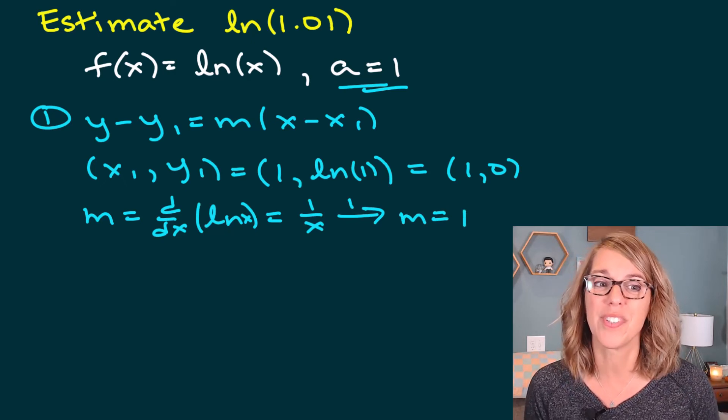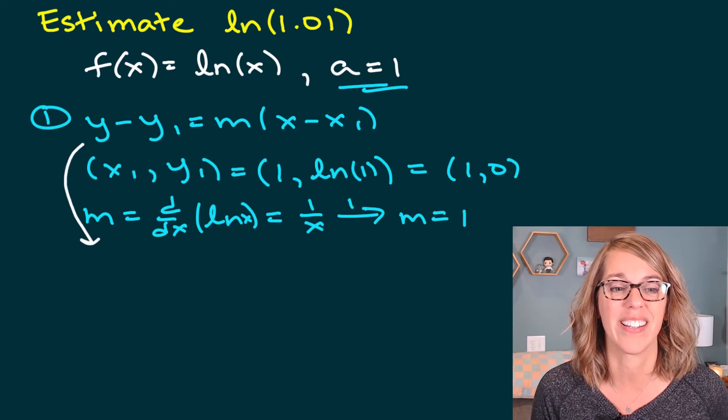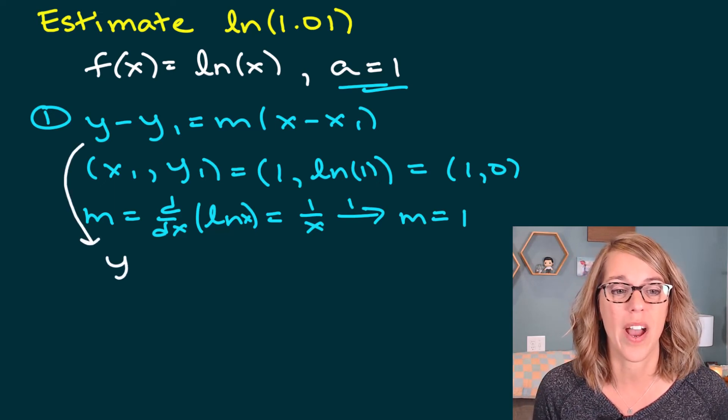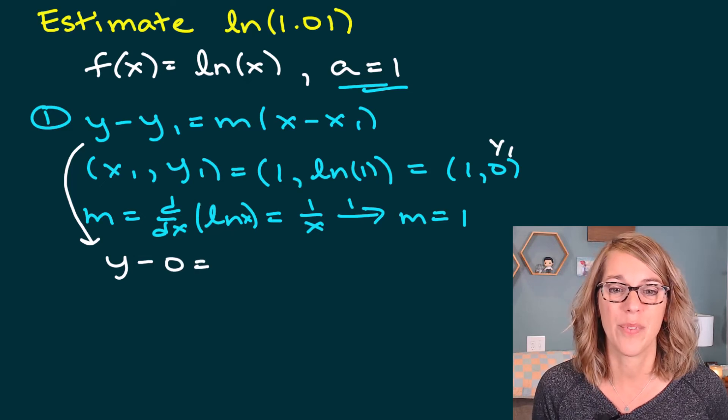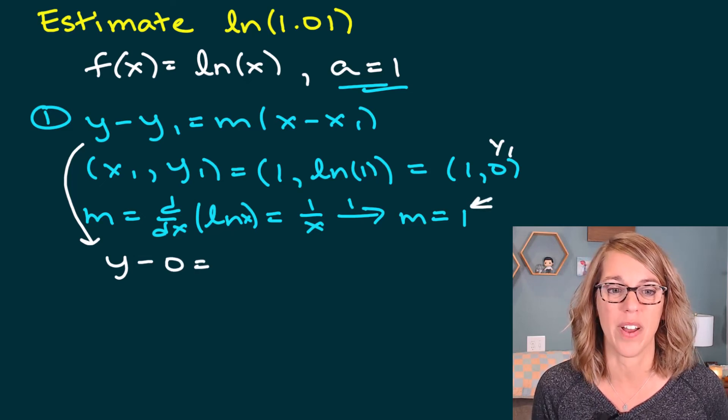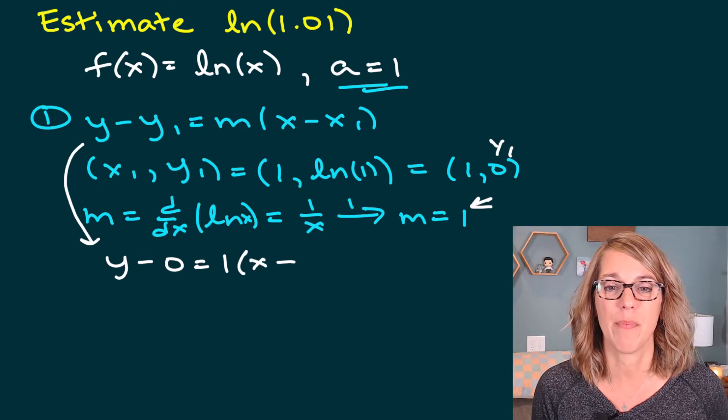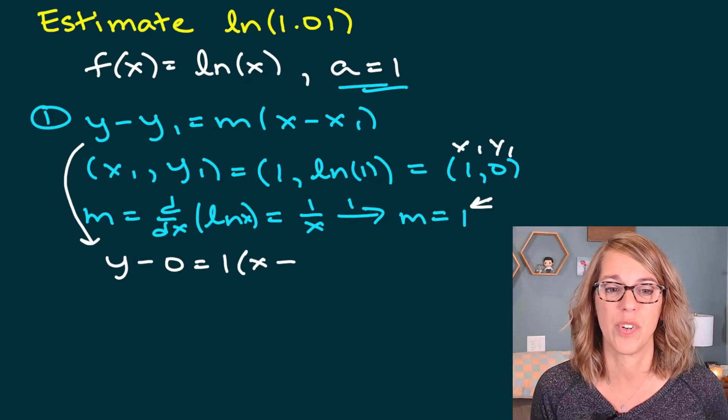So now I've got my values. Let's put this together in my tangent line. So I get y minus y₁, which is zero, is equal to m, which is 1, so 1 times (x minus x₁), which is 1.